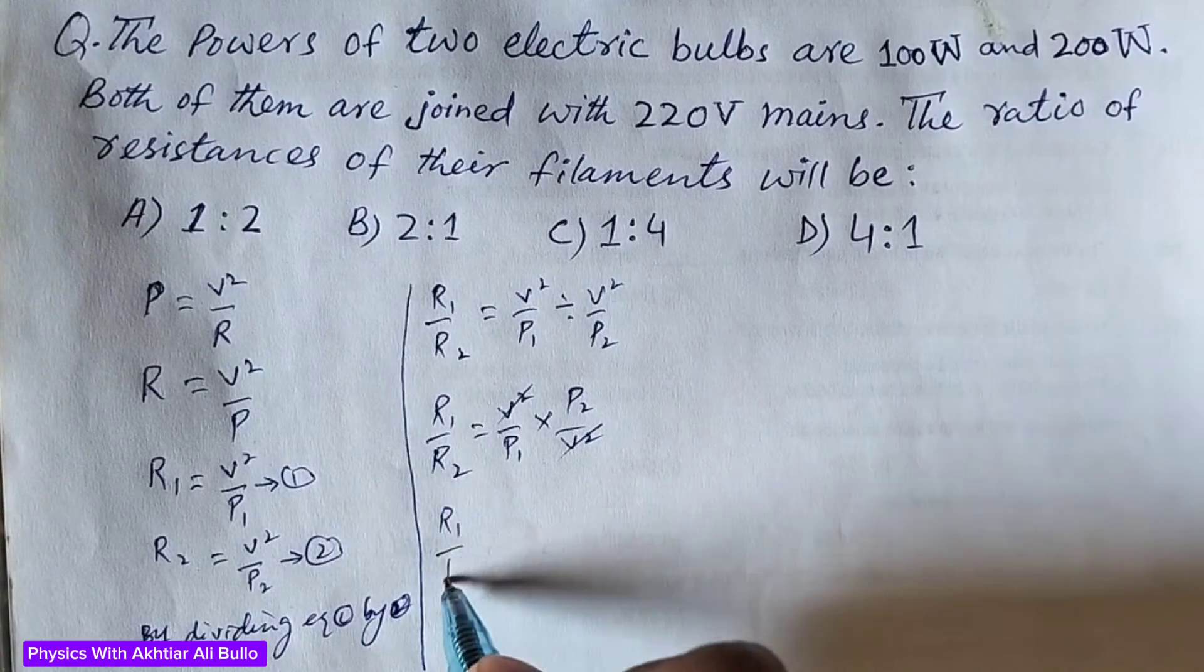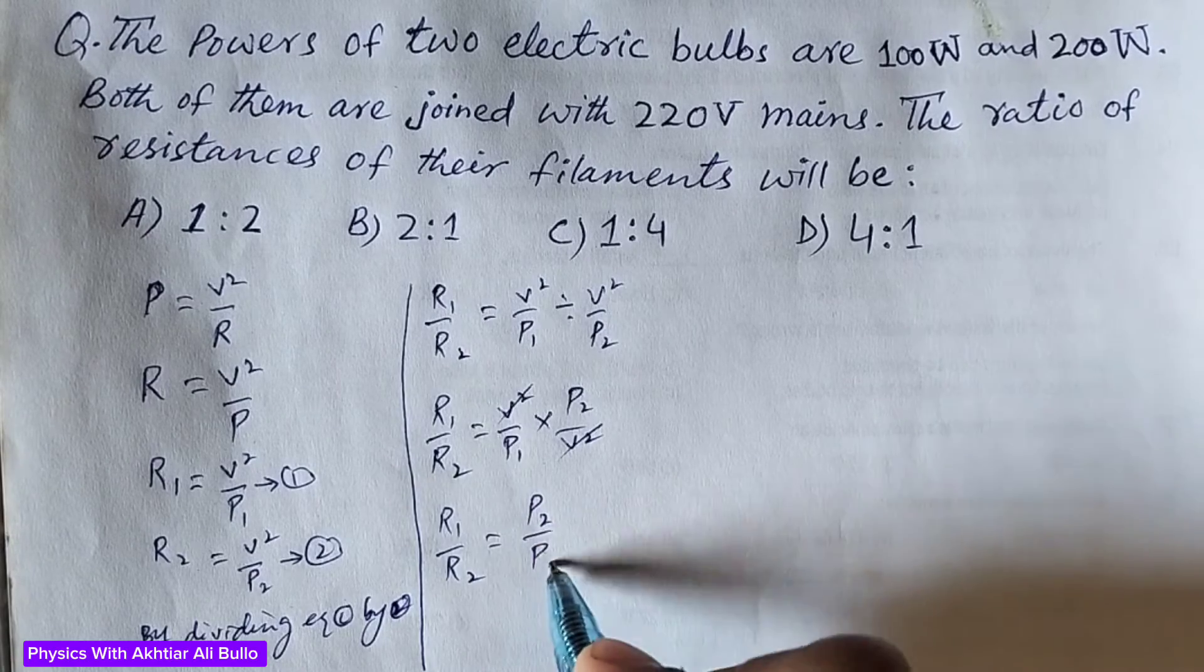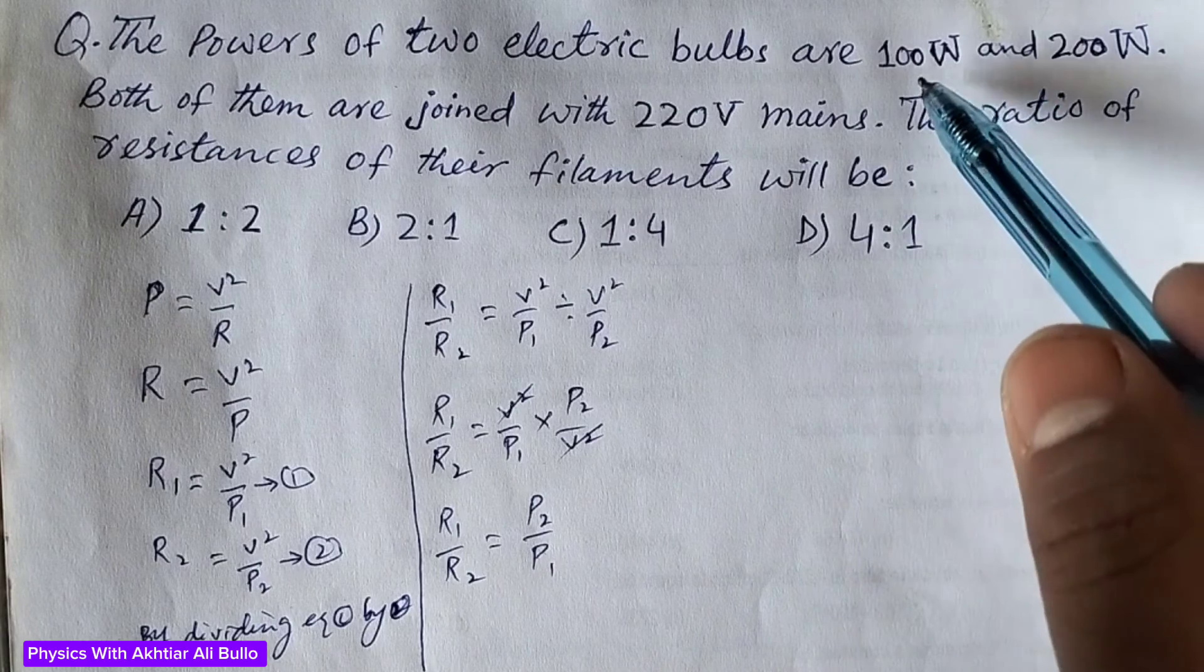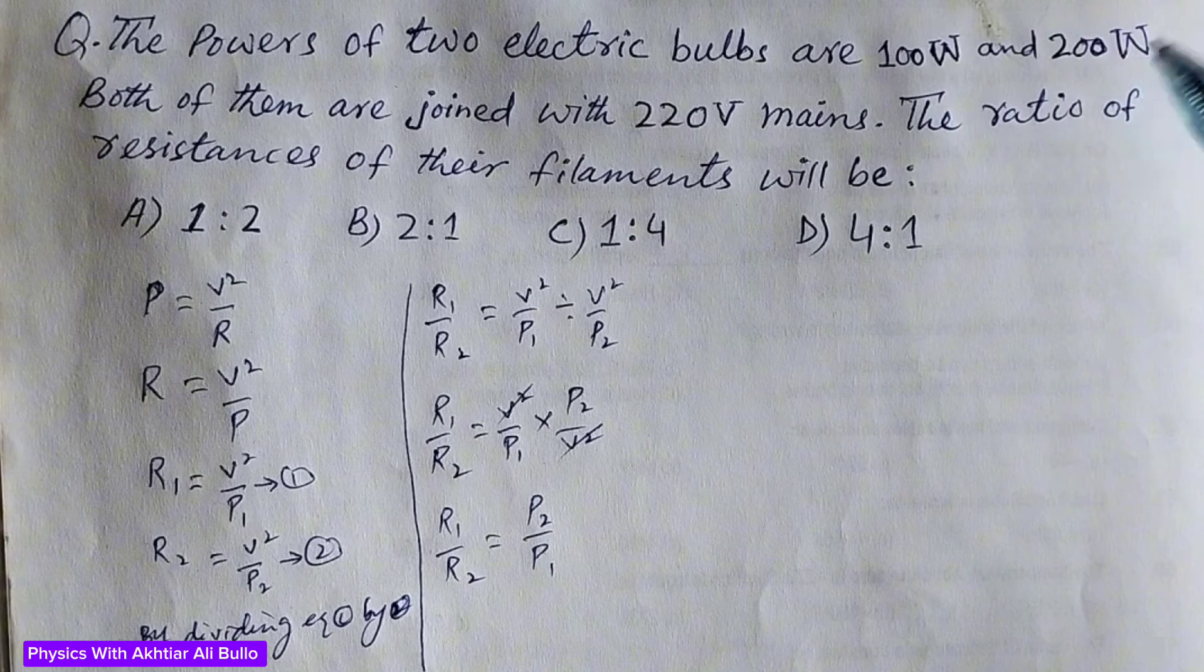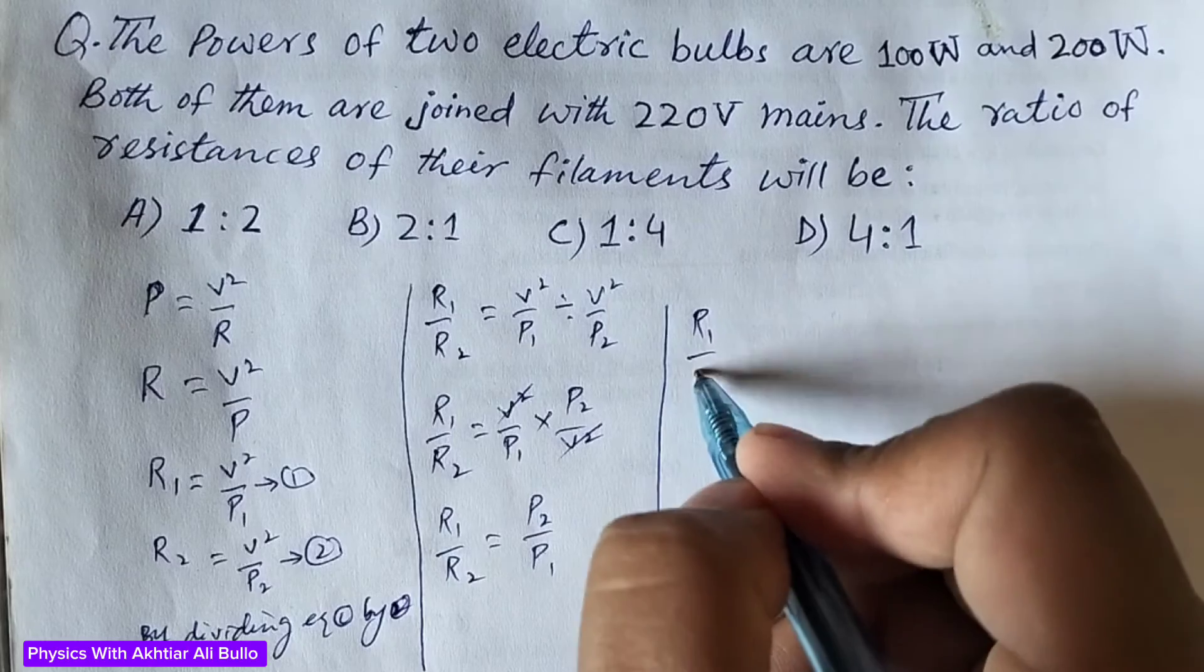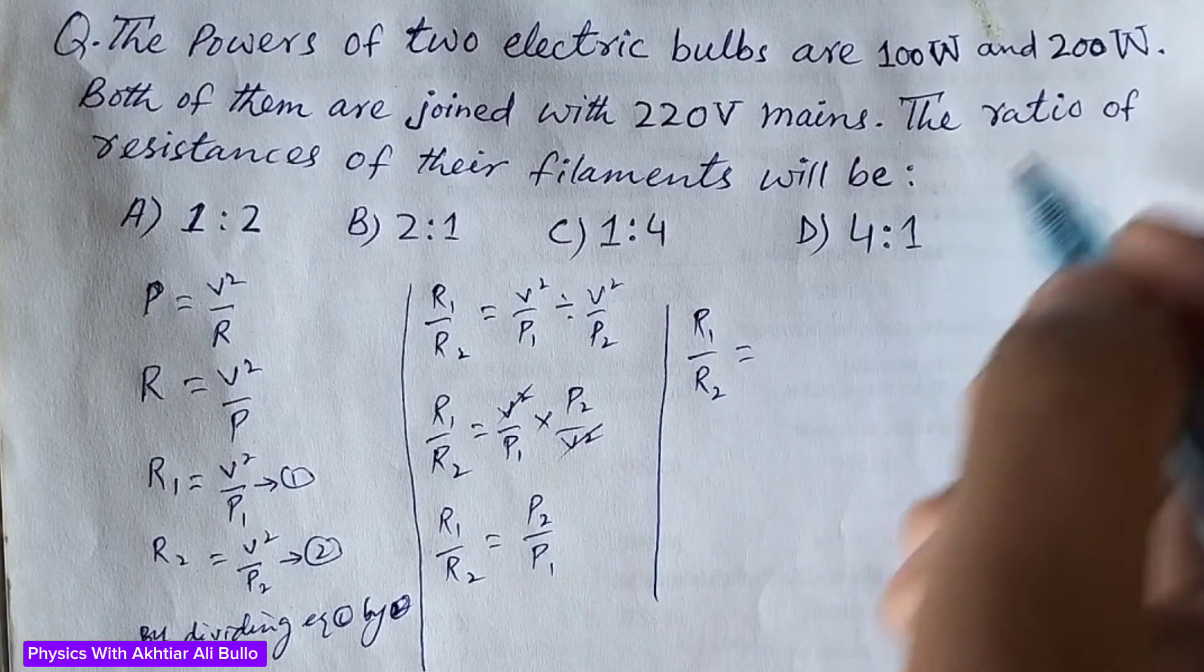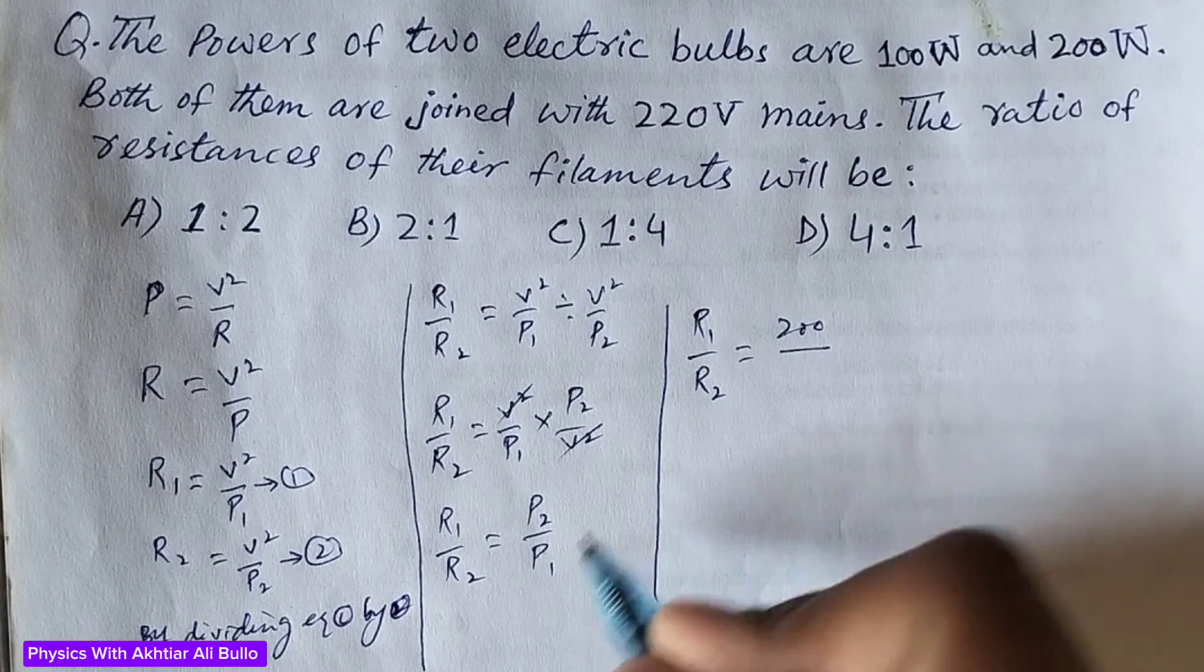P₁ is 100 watt and P₂ is 200 watt. So by putting the given values, R₁ upon R₂ will be equal to the value of P₂ is 200 divided by P₁ which is 100 watt.